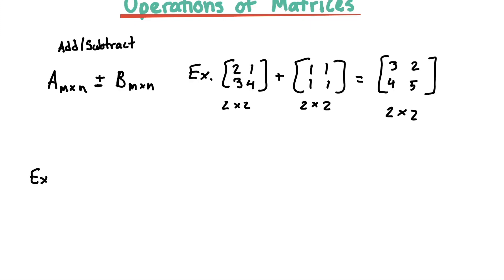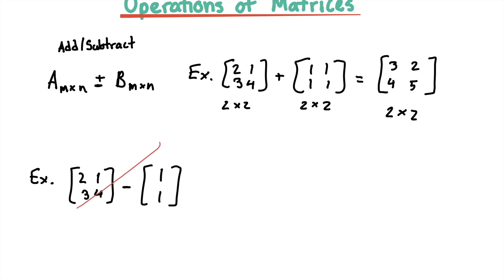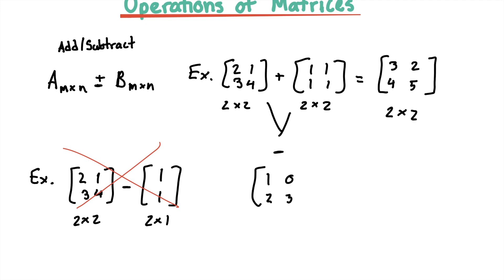If we have another example where we're going to subtract, we again have the matrix two, one, three, four and we subtract a one, one matrix. We can't do this because the matrices aren't the same shape — this is a two by two and this is a two by one, so we can't do that. If we were to subtract two valid same-shape matrices, we would get one, zero, two, and three.